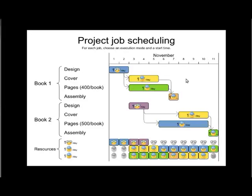Then we assemble the cover and pages, which takes another day. After seven days, Book One has been produced completely. Book Two is pretty much the same except it has 500 pages per book, so it takes five days instead of four days to produce all the pages.